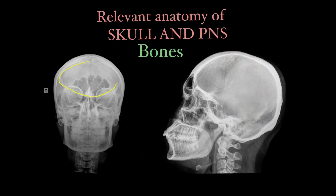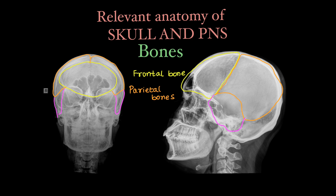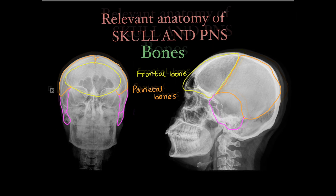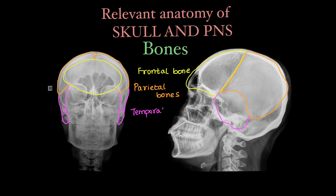First we will look at the bones of the calvaria or the cranial vault. This is the frontal bone in anterior aspect. Posterior superior aspect we have two parietal bones. Lateral aspect we have temporal bones. And in the posterior aspect we have the occipital bone.